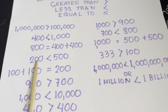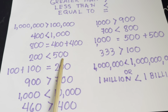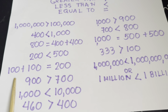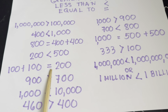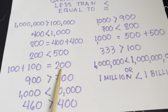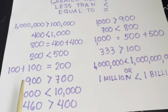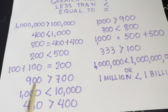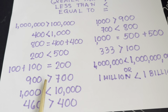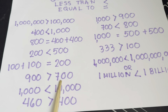Next, two hundred is less than five hundred. One hundred plus one hundred is equals to two hundred, or two hundred is equals to two hundred. Nine hundred is greater than seven hundred.